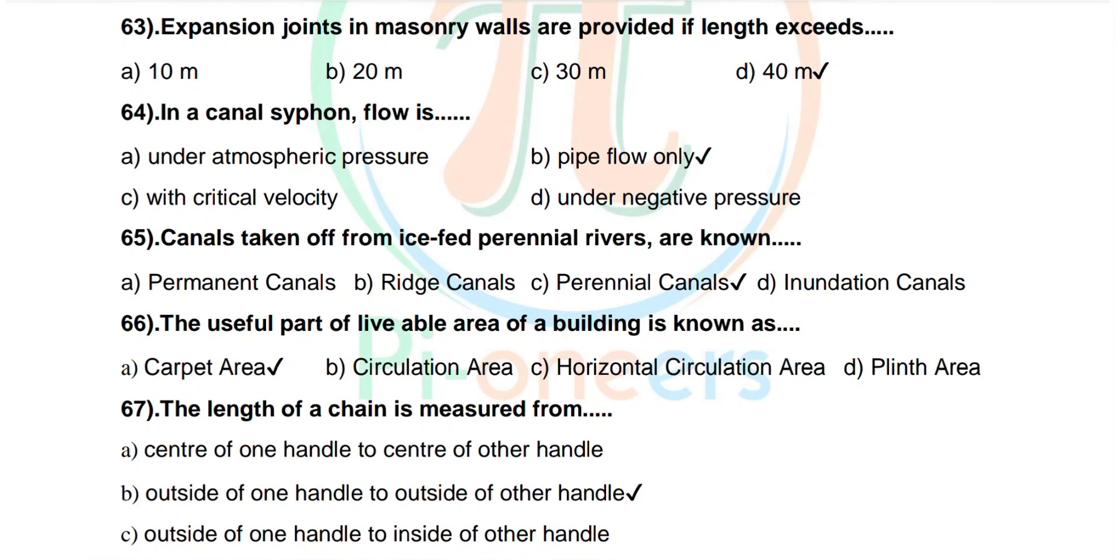Question number 64: In a canal siphon, flow is under atmospheric pressure pipe flow only with a critical velocity under negative pressure to transfer pipe flow only.